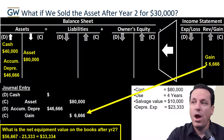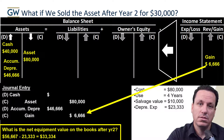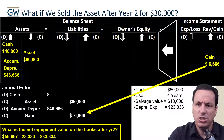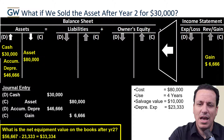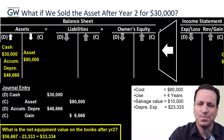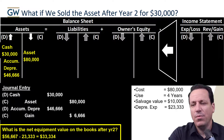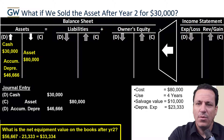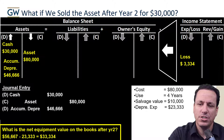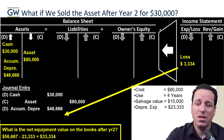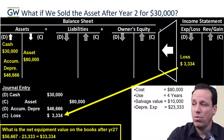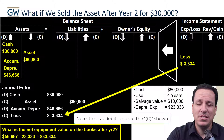What if we got less money — say $30,000 instead of $40,000? We change the cash debit to $30,000. Now our debits are less than our credits: $30,000 plus $46,666 = $76,666 in debits, versus $80,000 in credits. We remove the gain and instead calculate a loss: $80,000 minus $76,666 = a loss of $3,334. We debit a loss of $3,334 to balance the entry. Our debits now equal our credits.